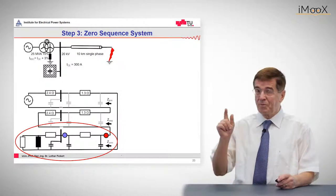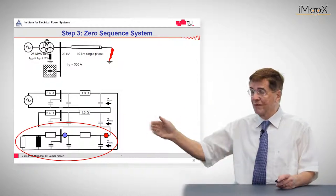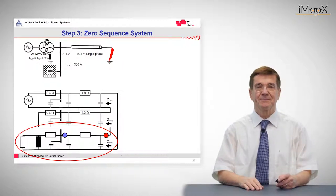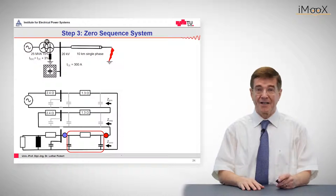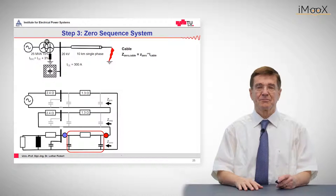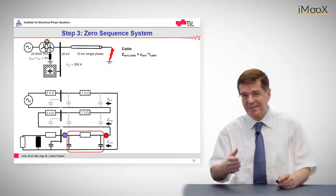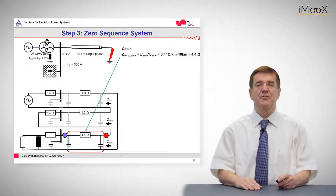Of further interest will be two points. The red one is the fault point and the blue one, further to the left, is the relay location. Now let's see what is the zero impedance of the cable. So the zero impedance of the cable is given by this well-known formula, specific impedance times line length, and that comes out in this case as 4.4 ohms.